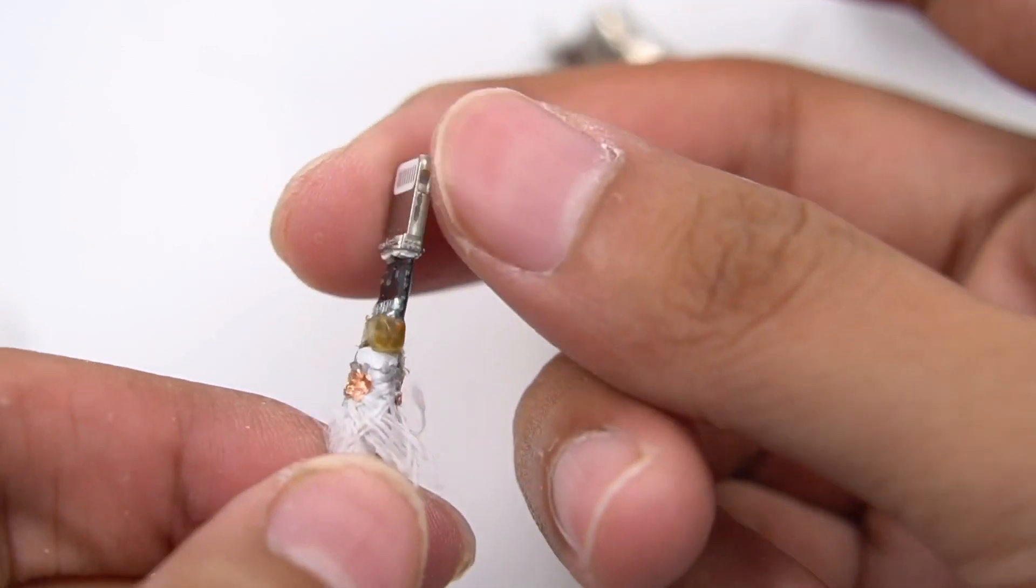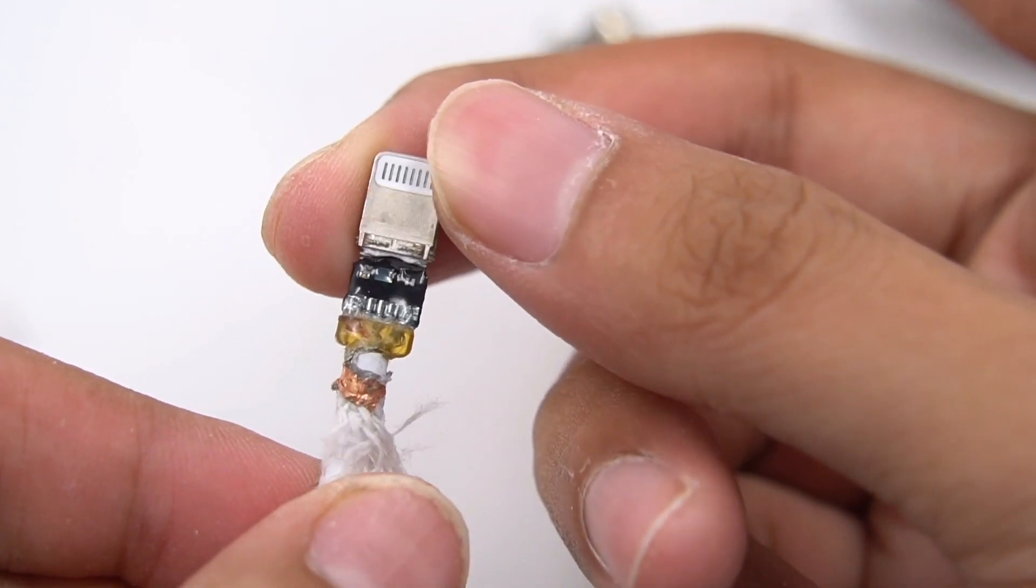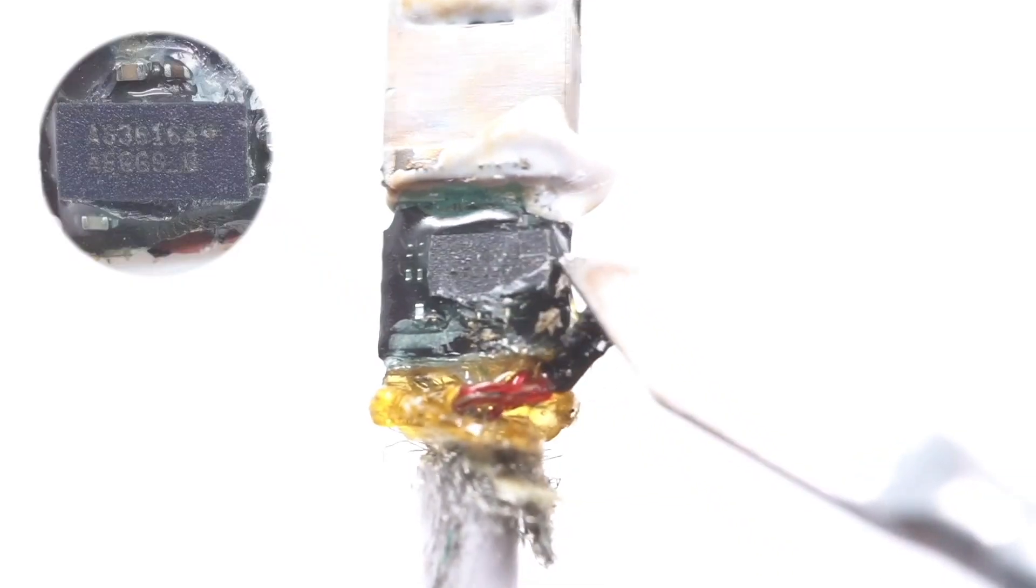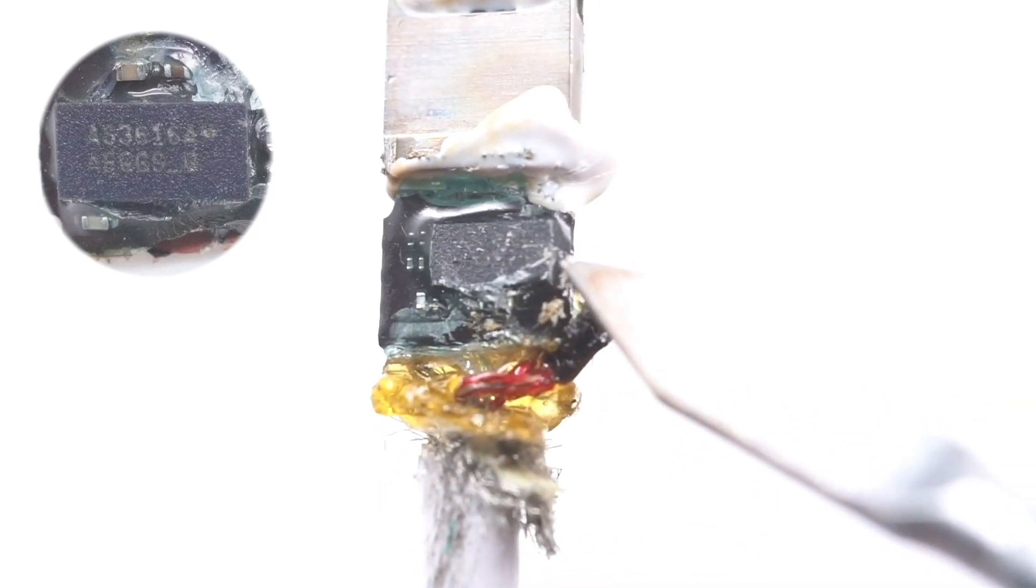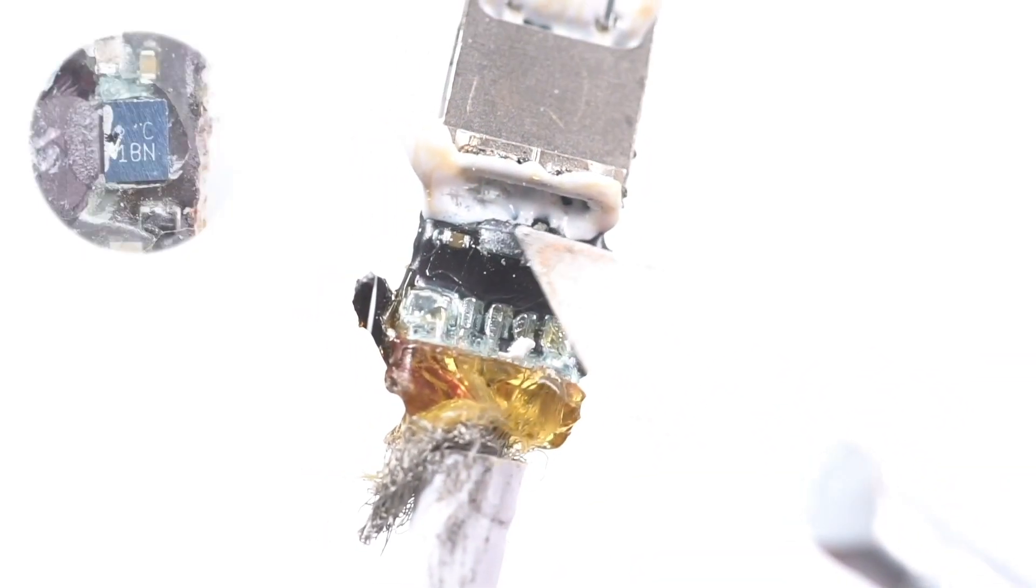We can see the PCB is reinforced and isolated by glue after removing the metal shields. Here is a big chip AS3616A and another small chip 1BN.